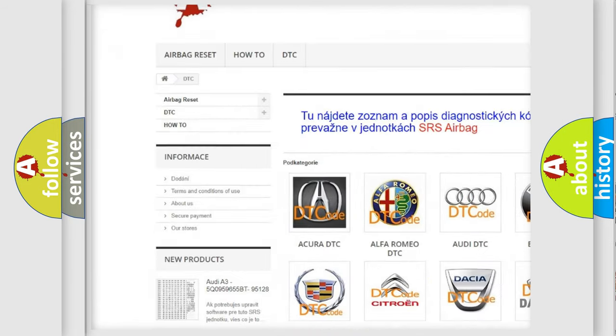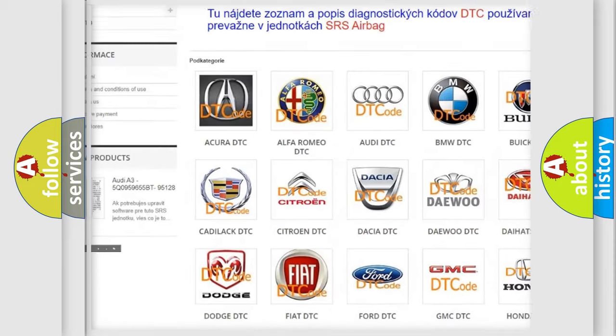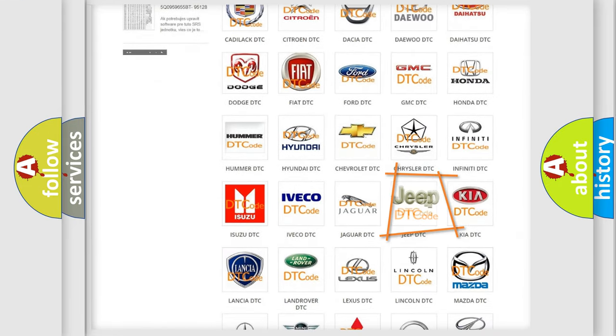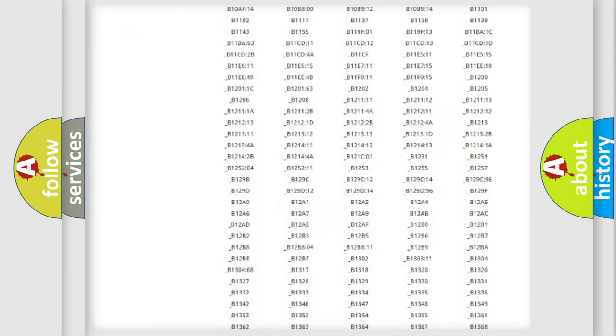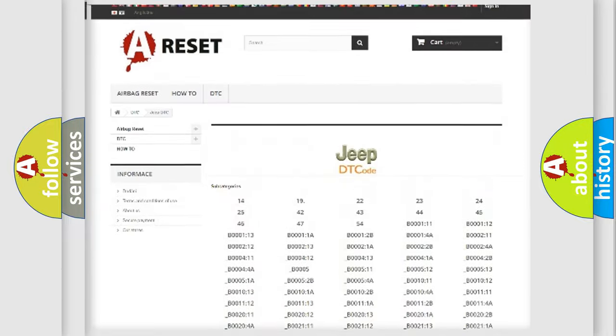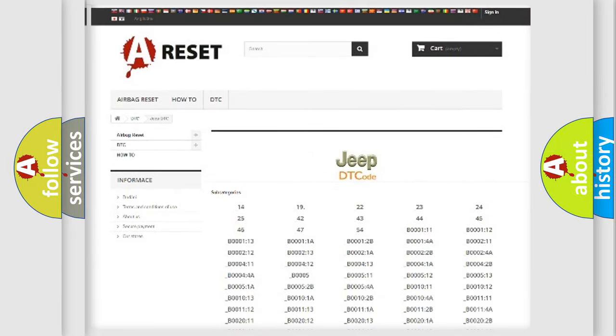Our website airbagreset.sk produces useful videos for you. You do not have to go through the OBD2 protocol anymore to know how to troubleshoot any car breakdown. You will find all the diagnostic codes that can be diagnosed in Jeep vehicles and many other useful things.